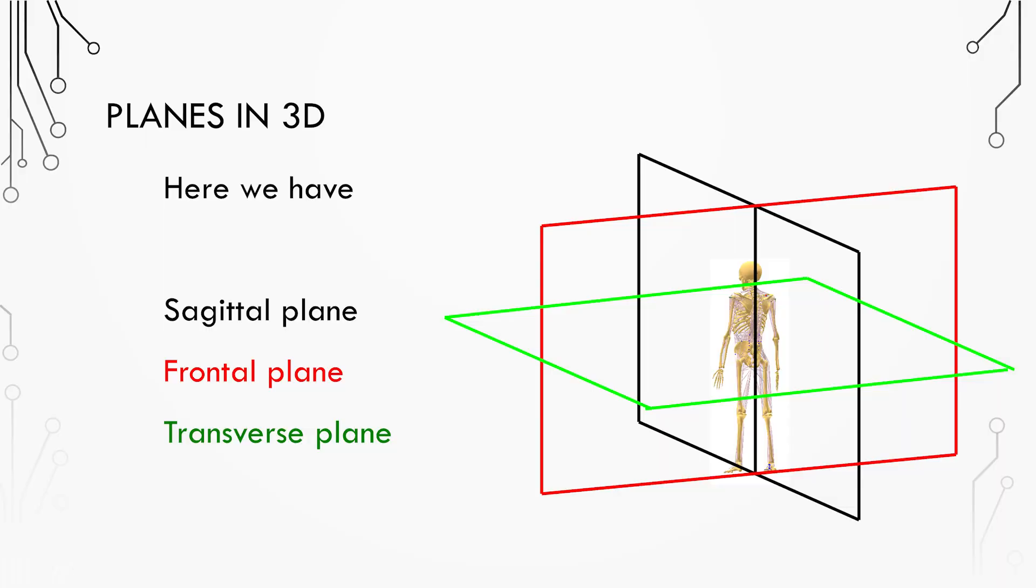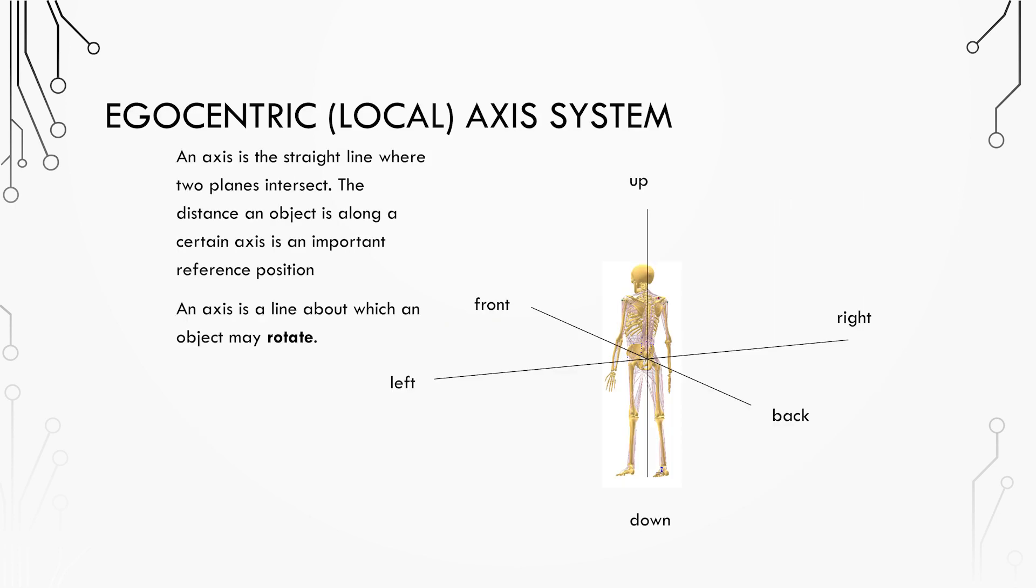If we combine all three planes together, they form a three-dimensional axis system. We can center them on a person to create a local coordinate system. An axis is created where two planes intersect and provides a line about which an object may rotate. The distance an object is along a certain axis is an important reference position. We can define our coordinate by where all three planes intersect, and this allows us to define movement from an egocentric frame of reference.